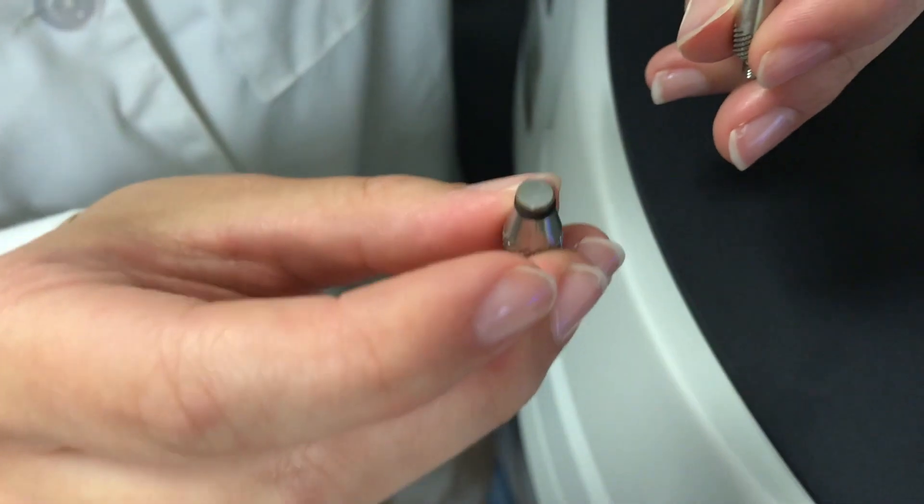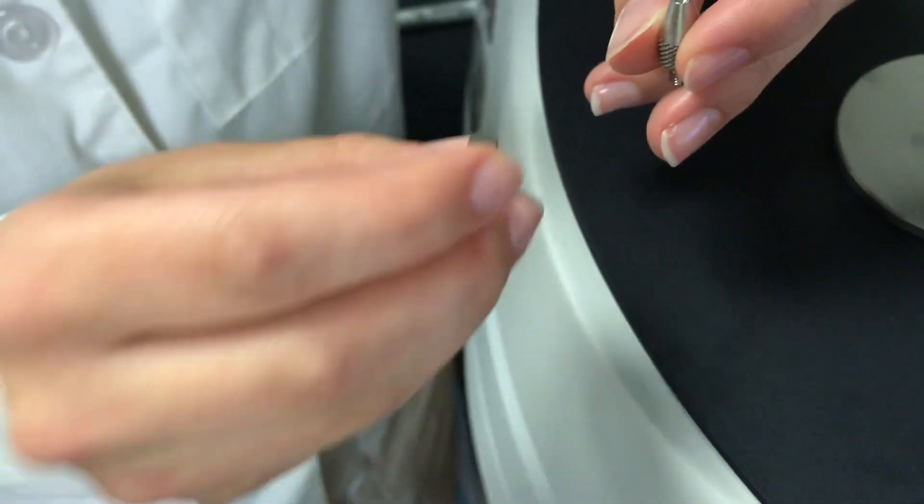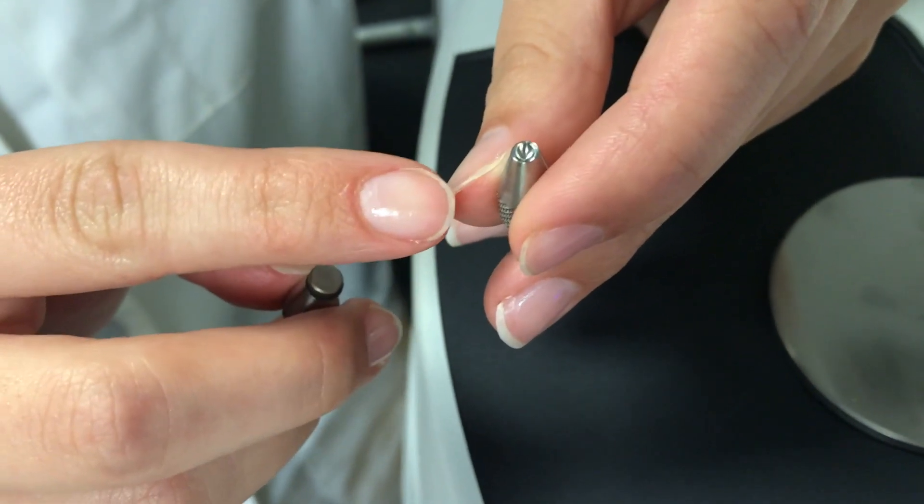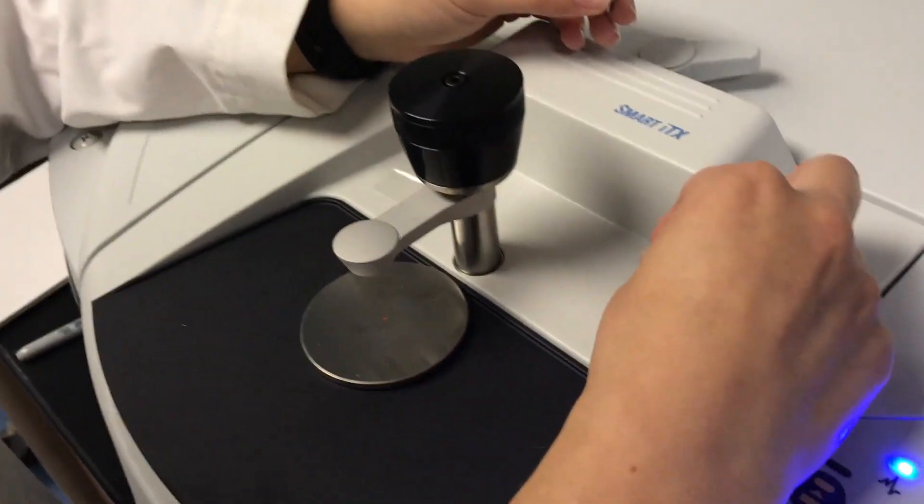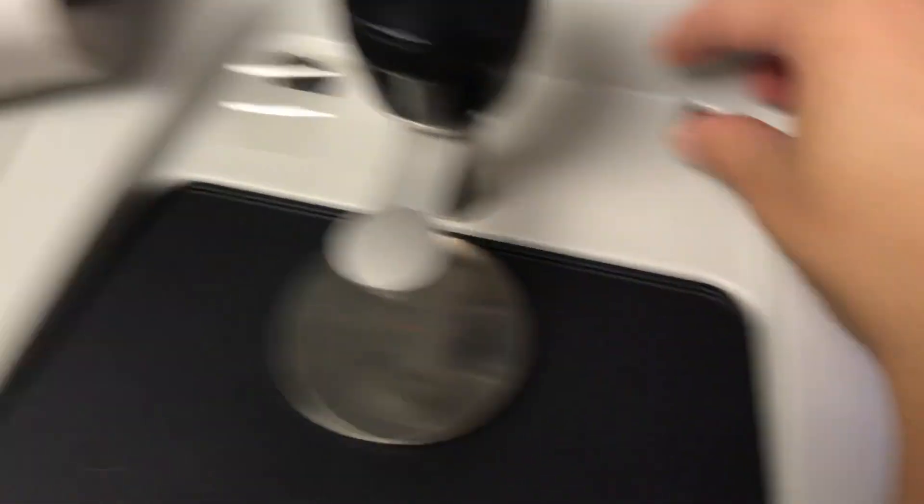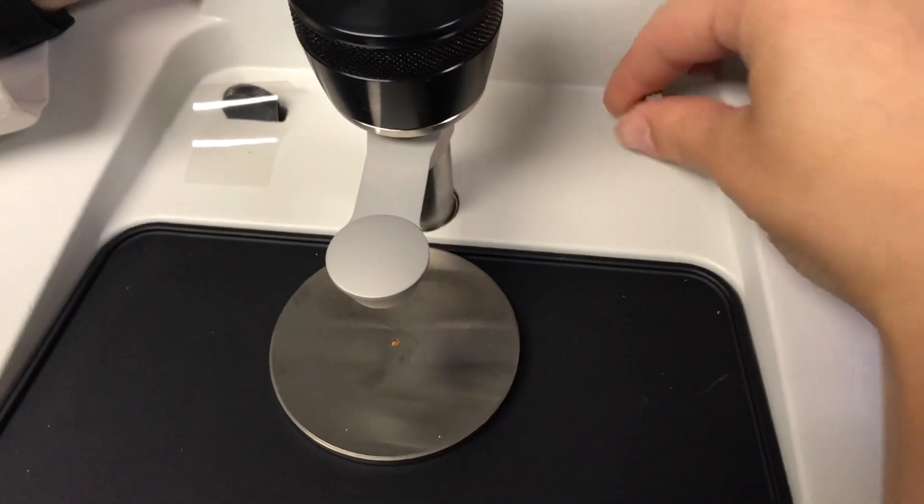The flat top accessory is used for solid samples and the concave accessory is used for liquid. When one of these accessories is not in use make sure to screw it into the spot designated right here in the top right corner.